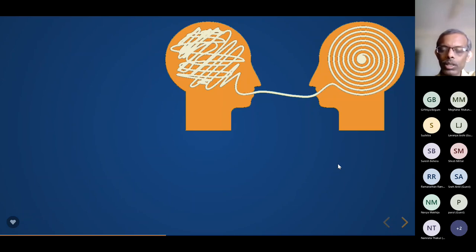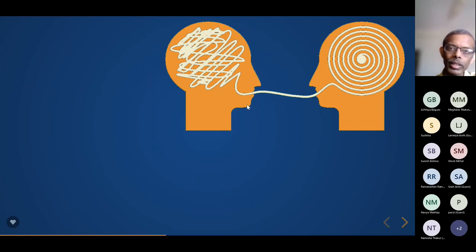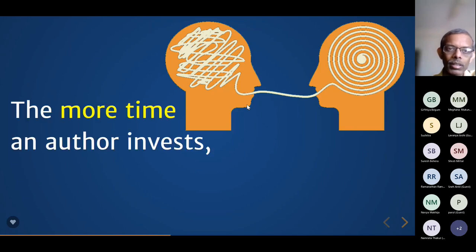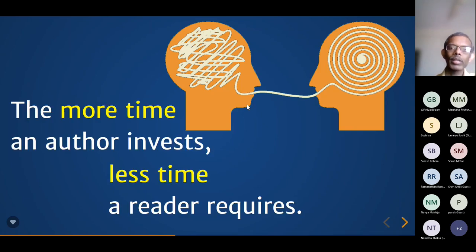As an author, what are your responsibilities? You are talking to the reader and what you write should not confuse the reader — in fact the reader should be more illuminated after reading the article. The reader comes to the article hoping to understand the topic, and after reading, the topic should be very clear to them. The more time an author invests, the less time a reader requires. Keep this in mind when writing your article.